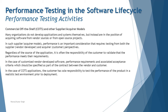Regardless of the source of the application, it is often the responsibility of the customer to validate that performance meets their specific requirements — similar to UAT, where the customer cross-checks that performance parameters are accepted and issues a sign-off. In the case of customized vendor-developed software, performance requirements and associated acceptance criteria should be specified as part of the contract between vendor and customer, containing all necessary information about what is required from a performance perspective.